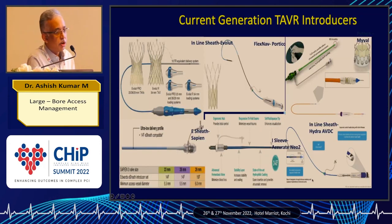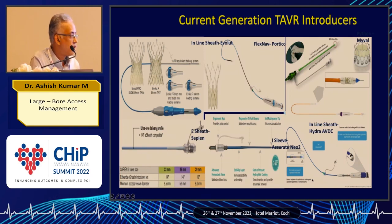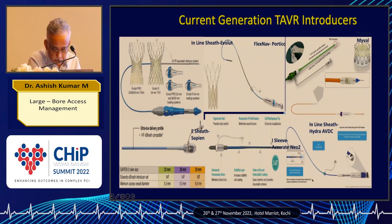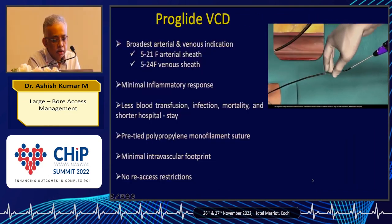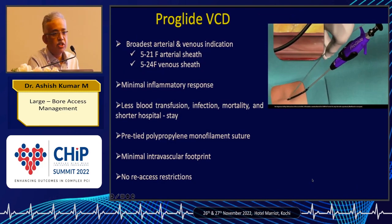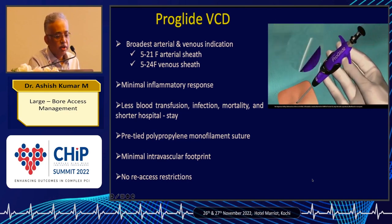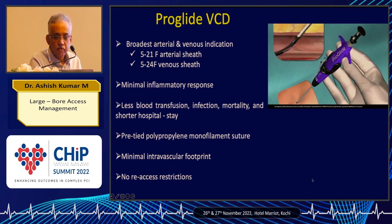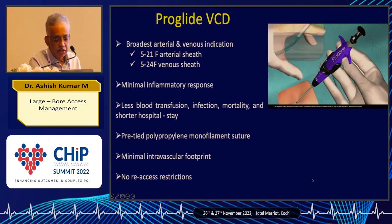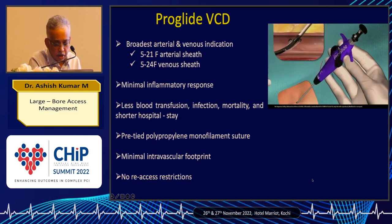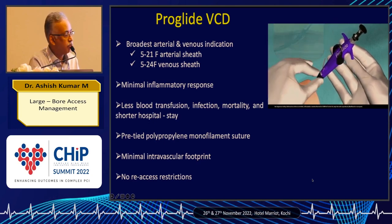For transcatheter valve procedures, which commonly require large bore access, you are looking at a minimum of 14 French, possibly much higher. The ProGlide is essentially what is available to us, along with the Angioseal and the Optura. The ProGlide offers minimal inflammatory response, less need for blood transfusion, decreased hospitalization, minimal intravascular footprint, and most importantly no re-access restrictions — you can even puncture the very next day.